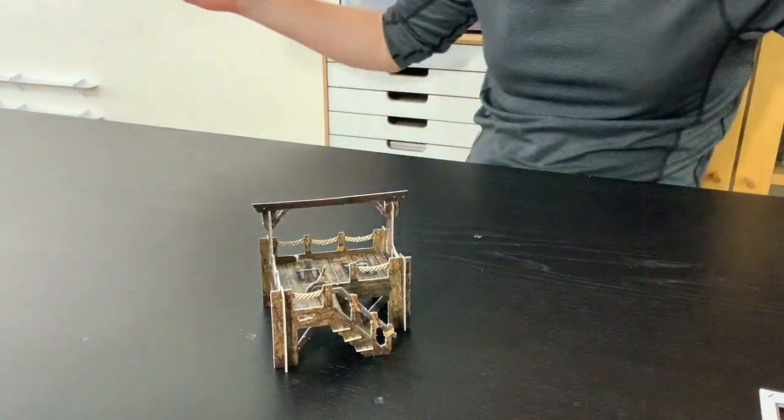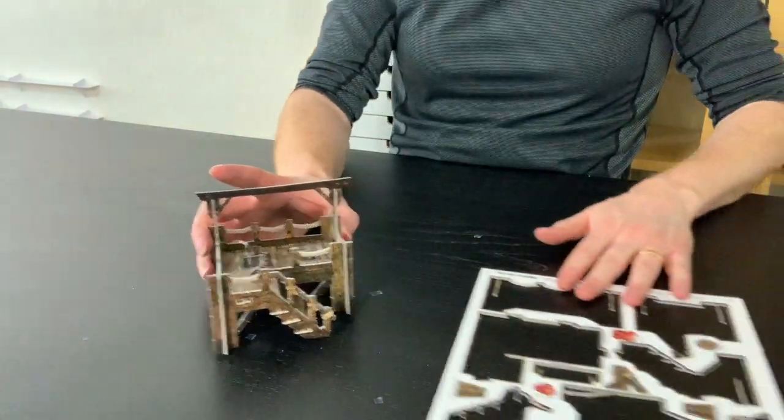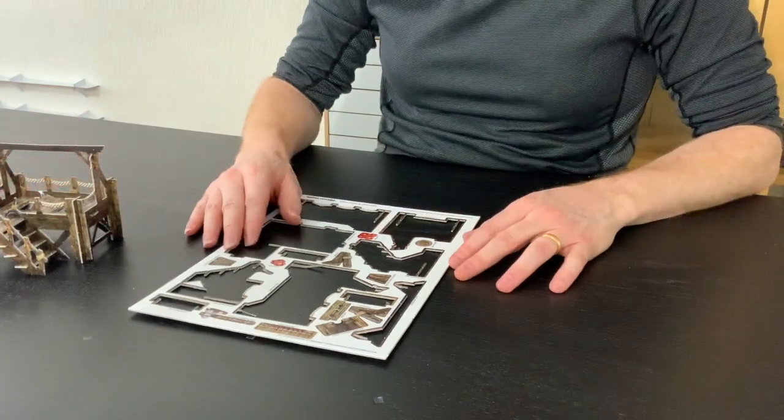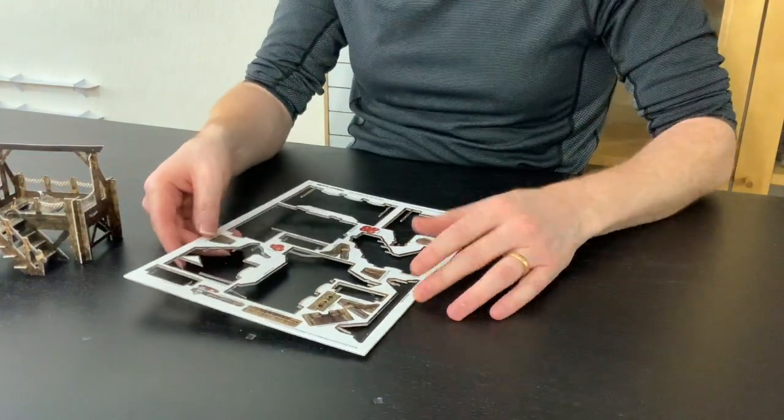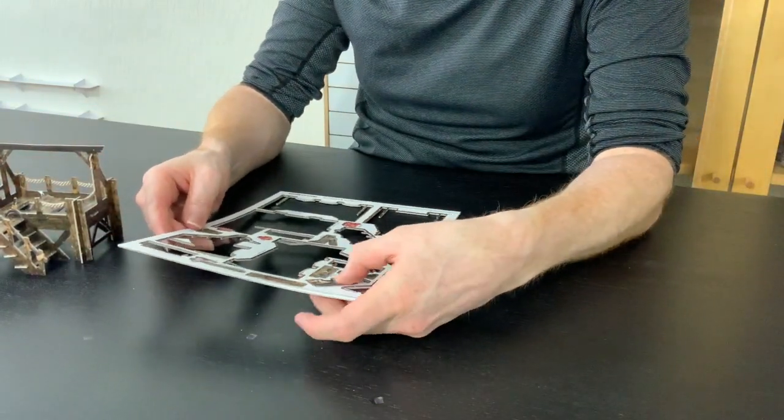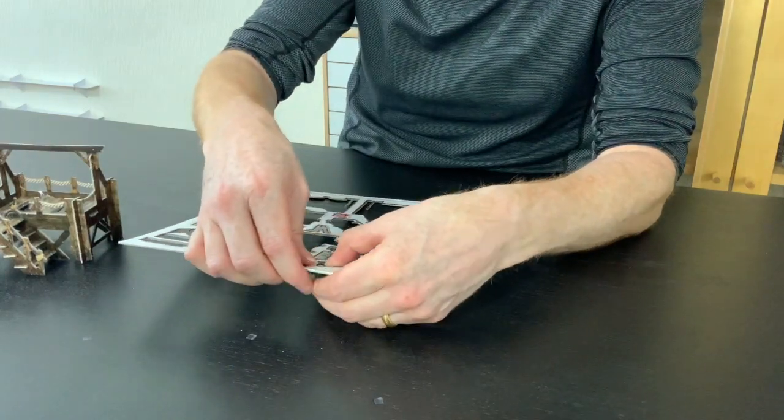So that's your gallows. What we have left on the sheet are the little scatter items, really, but they are unique to this set, so I'm going to pop them out and show you.